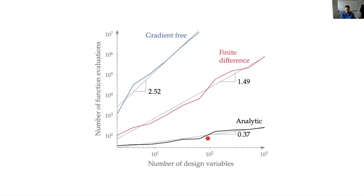For smaller problems, gradient-free methods can be very effective, especially since getting down to the exact-derivatives curve can take considerable developer time to modify the analysis for good derivatives. The challenge really comes as we get to bigger problems — hundreds or thousands of design variables. Gradient-free methods don't scale as well as we increase the number of variables, and it can become quickly intractable. At large scales, the gap can be two, three, four, five orders of magnitude. The fundamental reason is that without the gradient, we simply have less information.